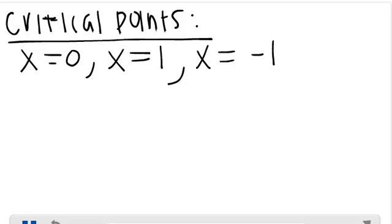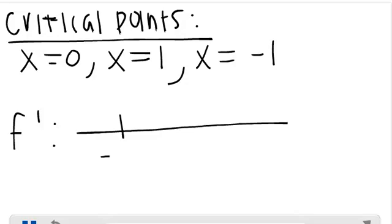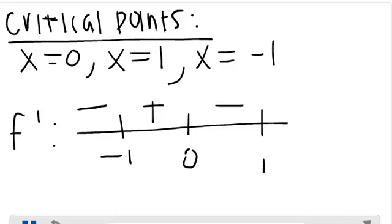The next thing we do is make a number line with your critical points. I will plug in a number smaller than negative 1 into f prime — that gives you a negative. When I plug in negative one-half, I get a positive. When I plug in positive one-half, I get a negative. And when I plug in 2, I get a positive.